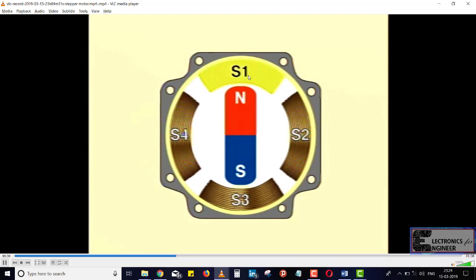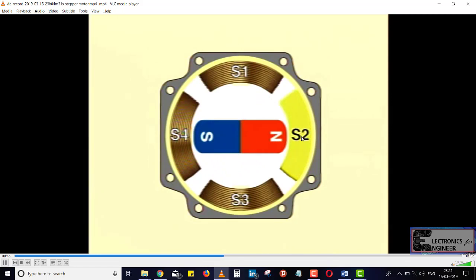Next, when the direct current is turned off in the S1 coil and turned on in the S2 coil, the S2 coil becomes an electromagnet and draws the rotor in 90 degrees clockwise direction and stops facing the S2 coil.